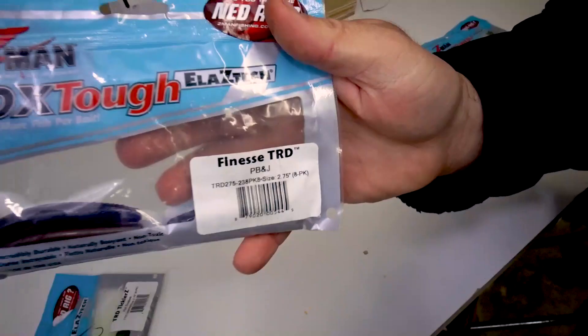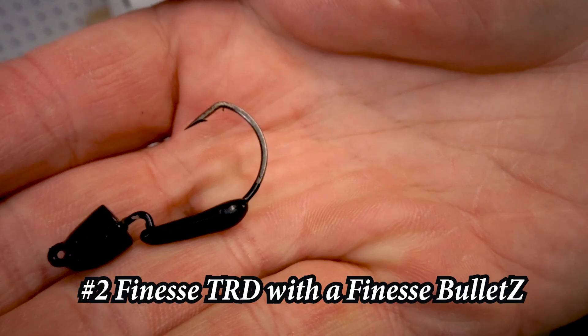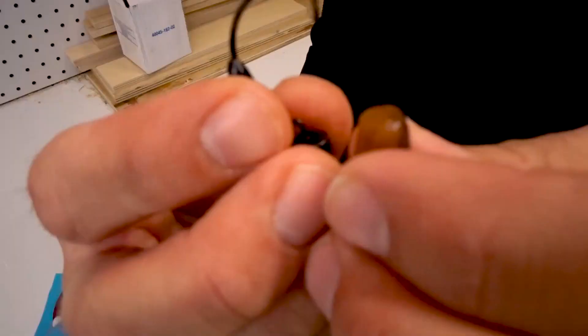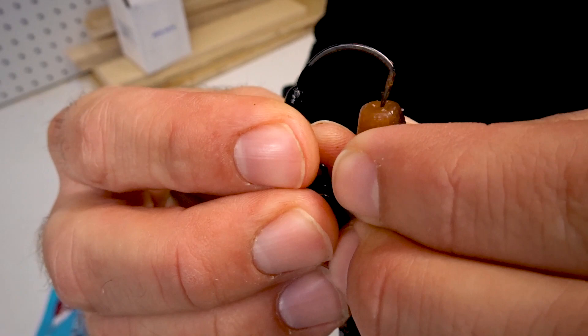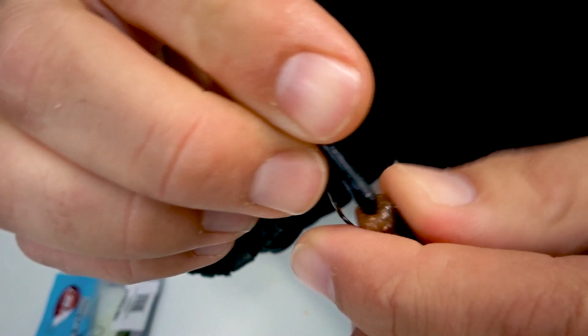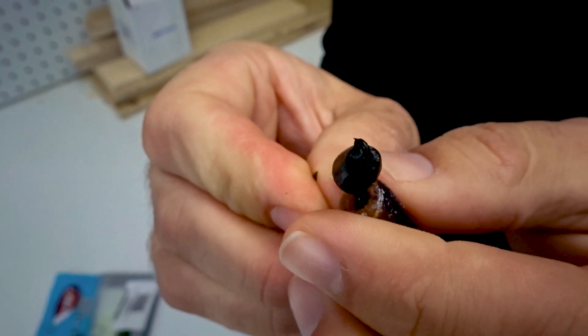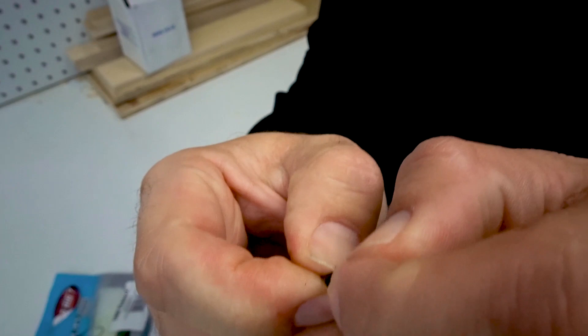On to the next one. Number two, finesse TRD with a finesse bullet Z. Same as the turbo crawl Z, but you're going to slide it up slowly past the weight on the bottom. Your worm's not going to tear because of the elastic, very durable. If you use other worms and try to do this, they'll just break apart.